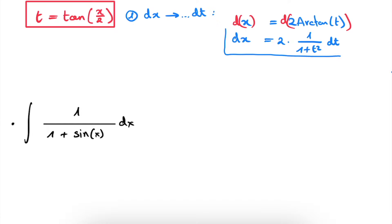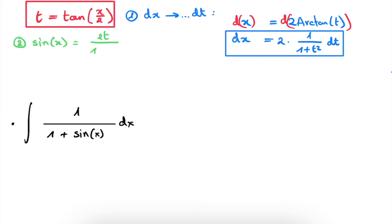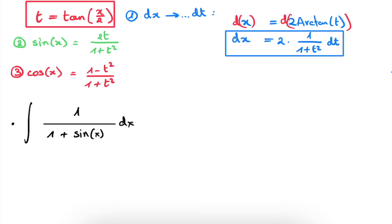The second consequence is that we can write the sine of x as 2T divided by 1 plus T squared. The derivation from T equals tangent of x over 2 to this expression I will leave for another video. The third consequence is that we can write the cosine of x as 1 minus T squared divided by 1 plus T squared. These three relations follow directly from our substitution and allow us to solve our integral.